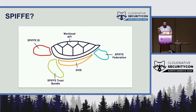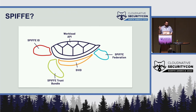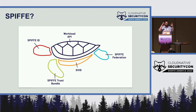What SPIFFE is not: it's not designed for non-software. This is all about software workload identity — not for humans, animals, artwork, NFTs, anything like that. It's also not an authorization framework. Identity is necessary for authorization — you need something to prove your identity — but SPIFFE doesn't say whether you can run a particular workload. You have to implement authorization yourself. Once you have SPIFFE and identity solved, your authorization actually becomes a much easier problem.